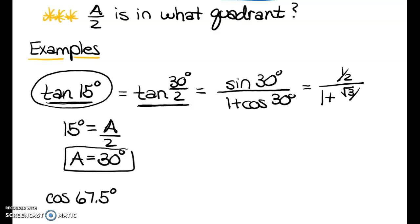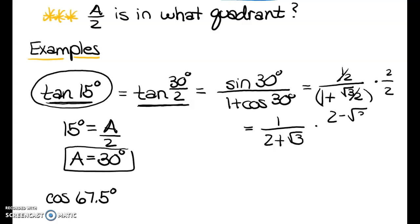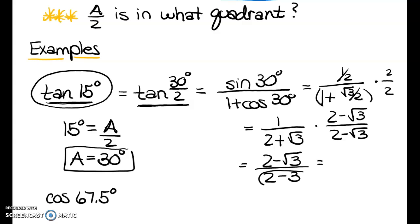Cosine of 30° is √3/2, so I'll multiply numerator and denominator by 2 to eliminate the complex fraction, getting 1 over 2 plus √3. Since I can't have a radical in the denominator, I rationalize: multiplying by (2 − √3)/(2 − √3) gives 2 − √3 over 4 − 3, which equals 2 − √3 over 1, so the answer is 2 − √3. Probably would have been easier to use the last tangent formula.